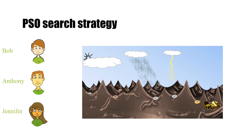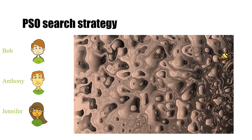Before we see the mathematical model of PSO, let's go back to our analogy. Here's a mountainous region and the team is about to start the search. The team decides to use the PSO technique to look for the treasure. To show how they move we need to look at them from the top. Here's a contour map of the region, and we assume that the treasure is in the valley on the right-hand side.